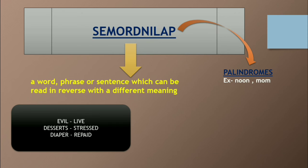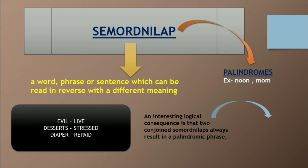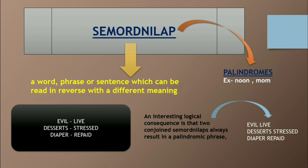ایک بہت interesting چیز ہوتی ہے کہ اگر آپ ایک word اور اس کا Semordnilap ایک ساتھ reverse read کرے، تو وہ ایک palindromic phrase بنتا ہے۔ For example، یہی جو word ہم نے دیکھا — 'evil live' — اگر میں اس کو reverse read کروں، تب بھی 'evil live' ہی بنے گا۔ Similarly، 'desserts' کا Semordnilap تھا 'stressed' — اگر میں 'desserts stressed' کو ایک ساتھ reverse read کروں، تو 'desserts stressed' ہی بنے گا۔ یعنی ایک word اور اس کے Semordnilap کو ایک ساتھ read کرنے سے that becomes a palindromic phrase۔